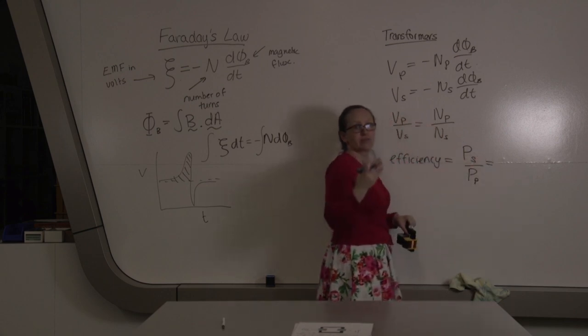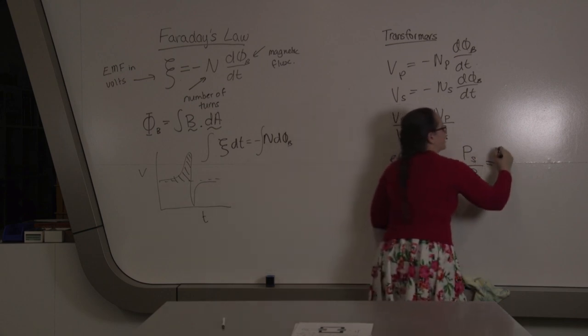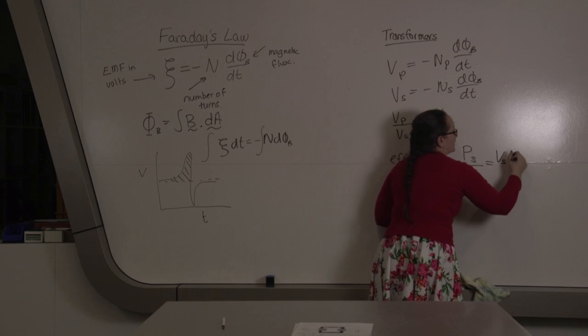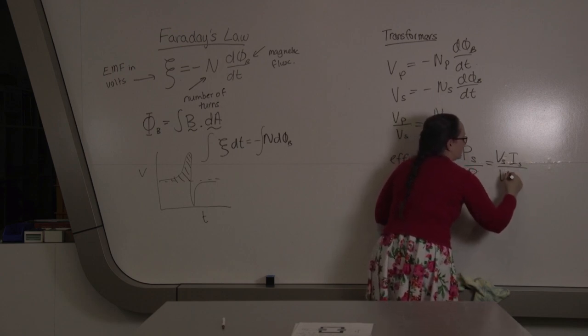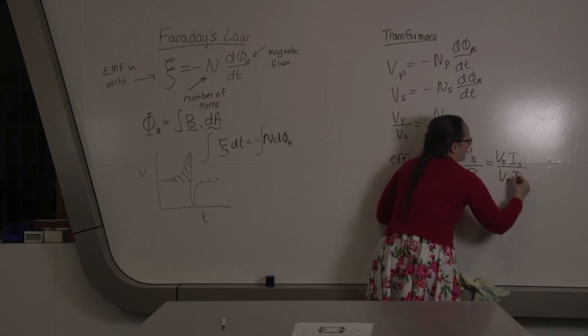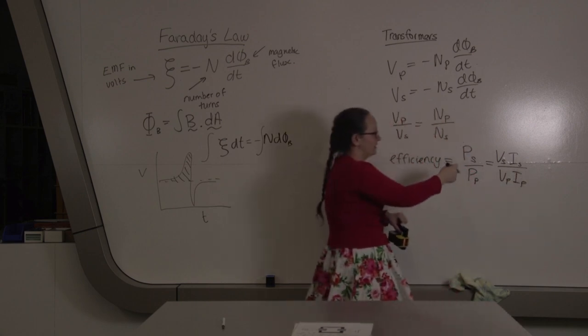Power is just given by voltage times current. So this is equal to the voltage in the secondary coil times the current in the secondary coil over the voltage in the primary coil times the current in the primary coil.